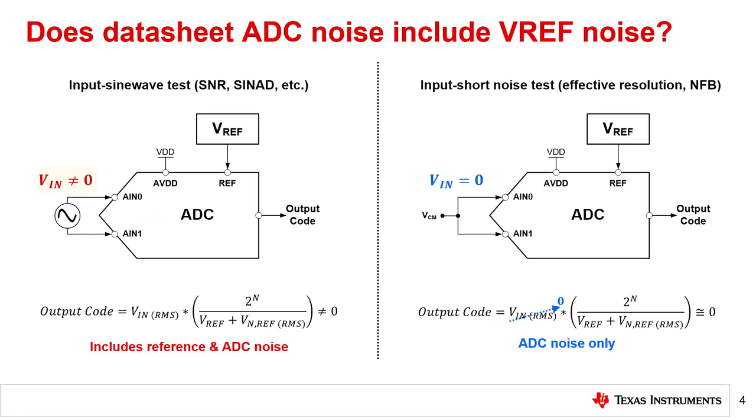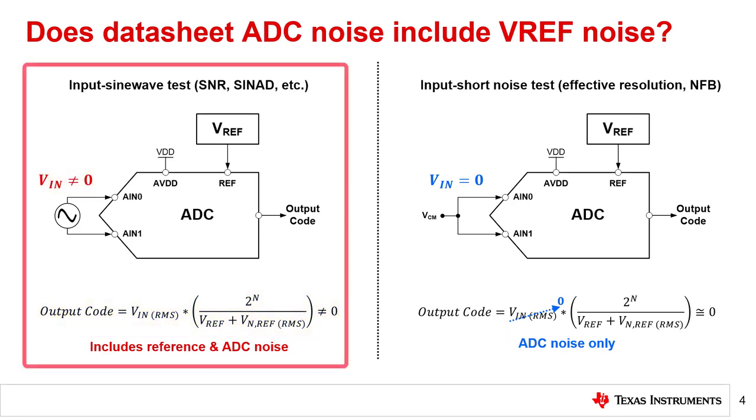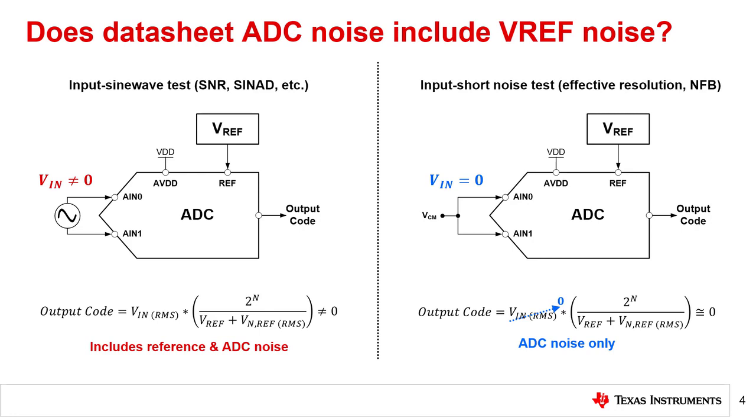When you input a non-zero signal to the ADC, the ADC's output code includes some reference noise. This is the case for characterizing SAR or wideband Delta Sigma ADCs using the input sine wave test as shown on the left. ADC datasheet parameters such as SINAD and SNR include some reference noise. Therefore, if your design uses a system similar to the ADC's testing setup, you can reasonably expect to achieve datasheet noise performance.